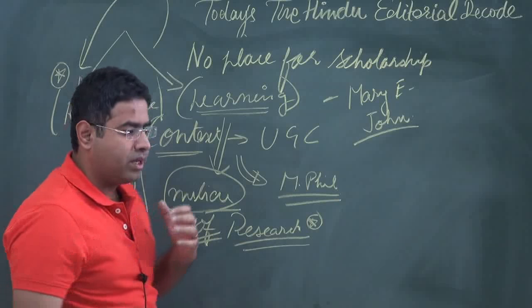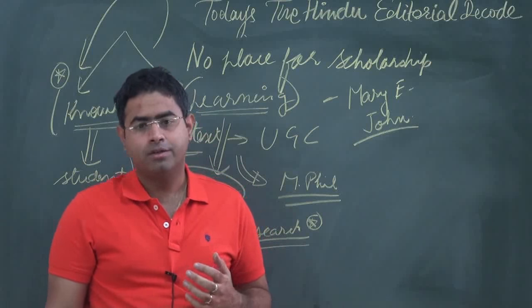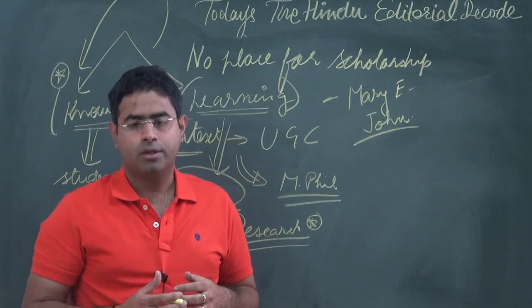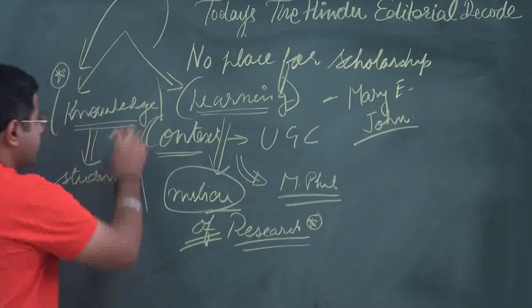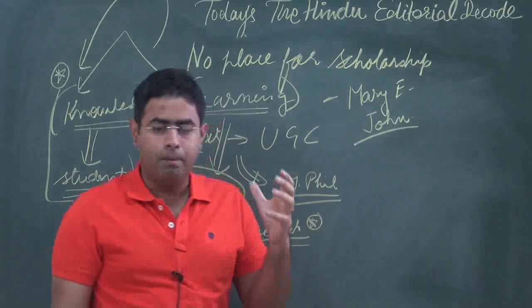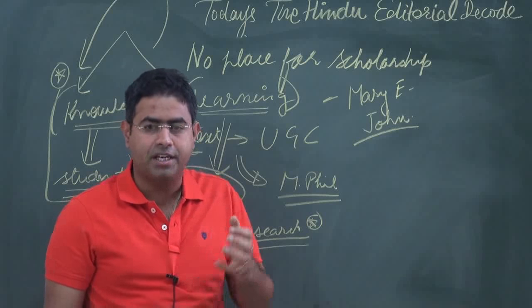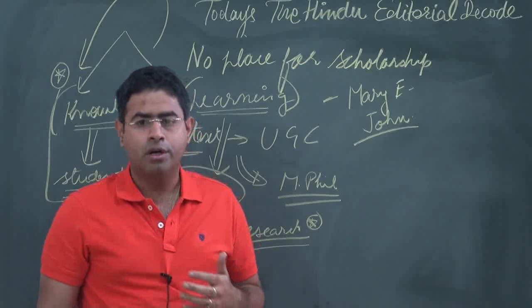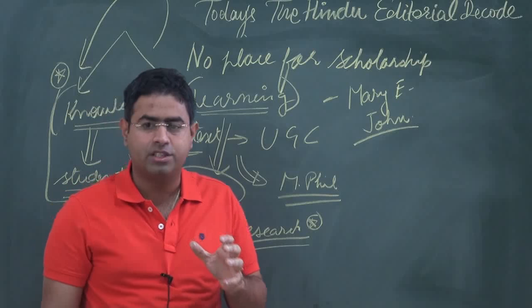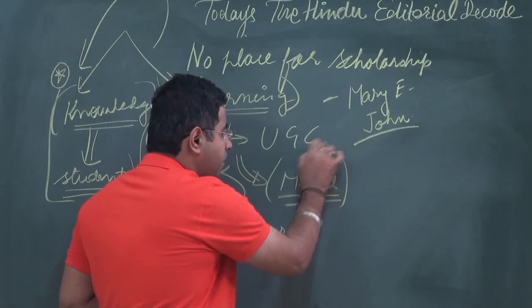In the Indian education system, universities were supposed to be the temples of research, the laboratories of research. But what they have become is just a medium, a source of conferring knowledge to the students. The intent, the purpose and logic for which universities were created is being defeated, and this is being defeated more by the new tinkerings and changes that UGC is proposing. The change is the reduction in the intake of students taking the MPhil program.